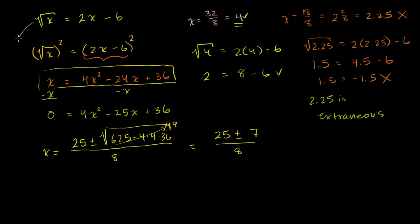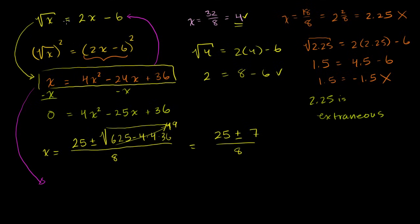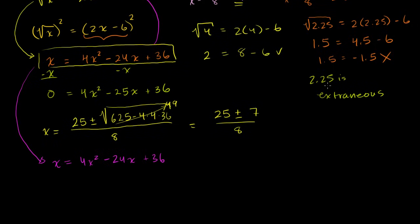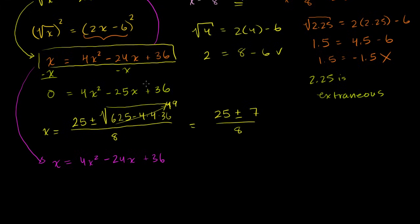There's something slightly different about the original equation versus the squared equation. To go from the squared equation back to the original, we take the principal root of both sides — not the negative square root. When you square both sides, you're either losing or gaining some information, because there are actually two valid interpretations of the squared equation.